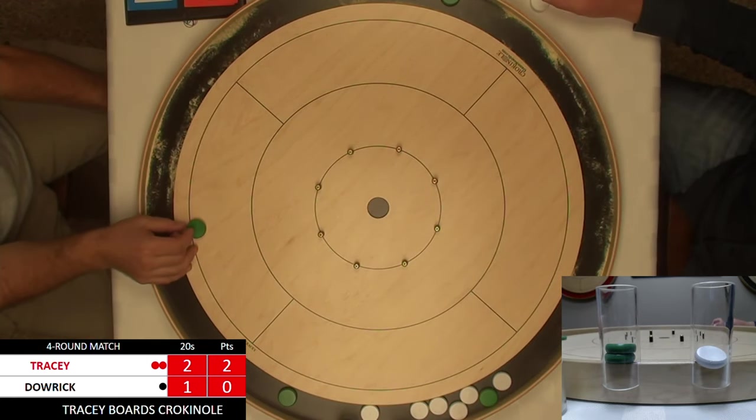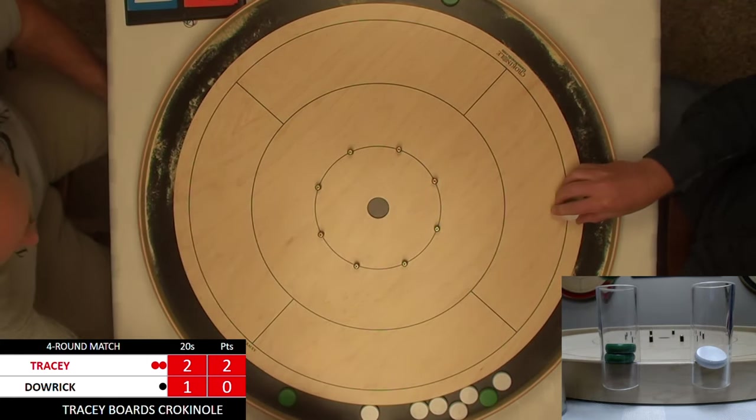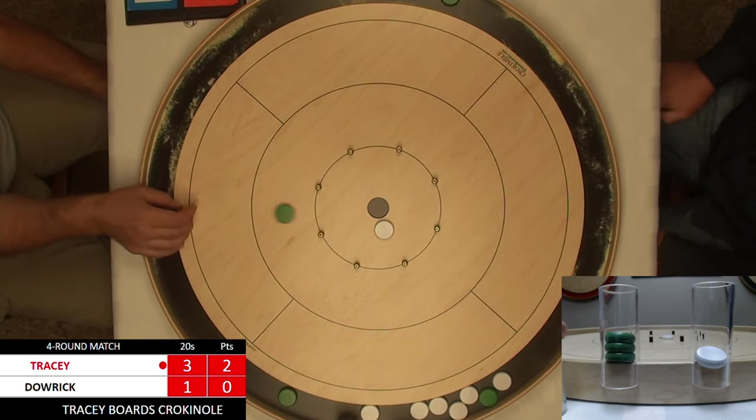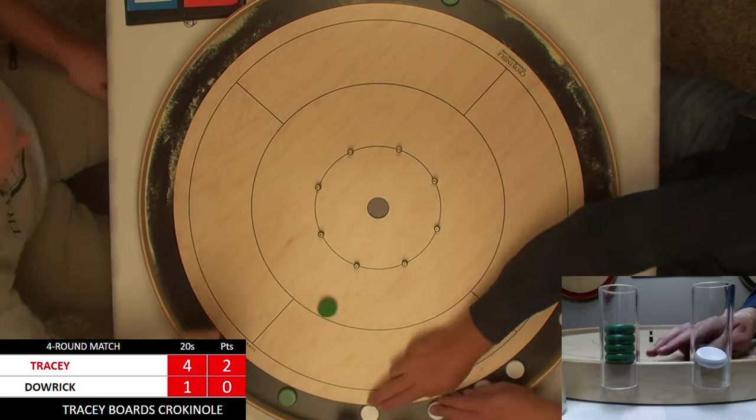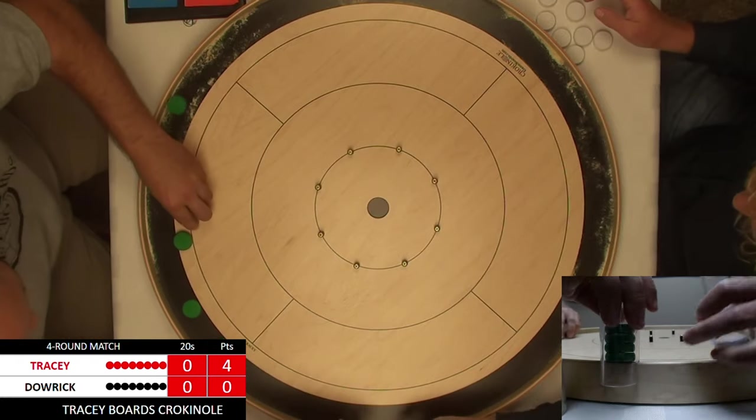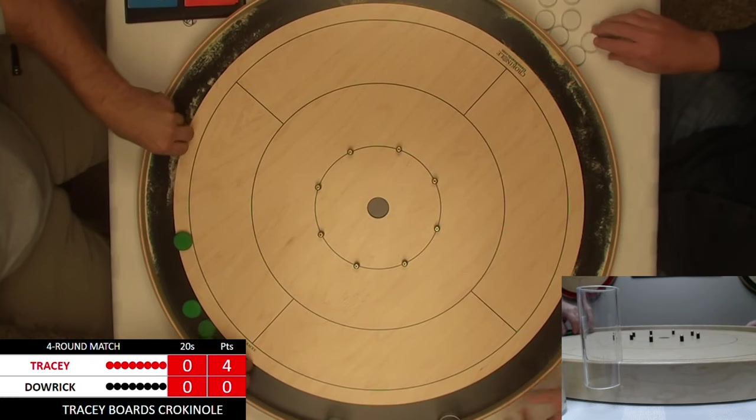Now Simon's finding his range on the open 20s. Man, I need to do something. Jeremy is at 4-1 in the 20s, Jeremy's at 4-0 in this round.